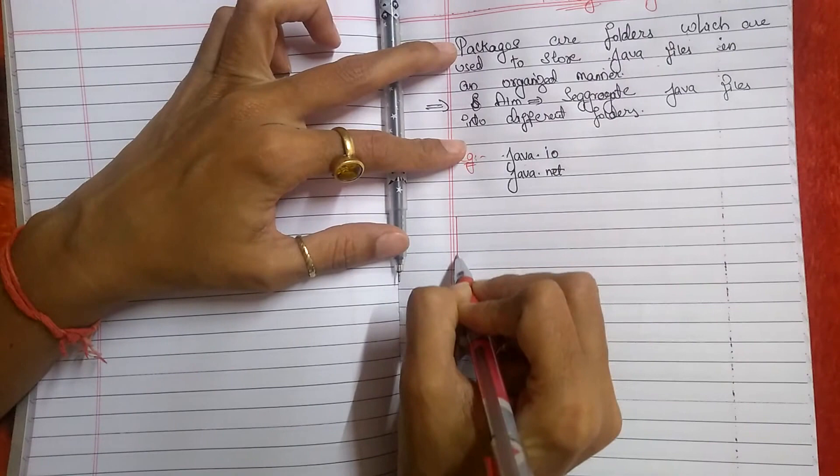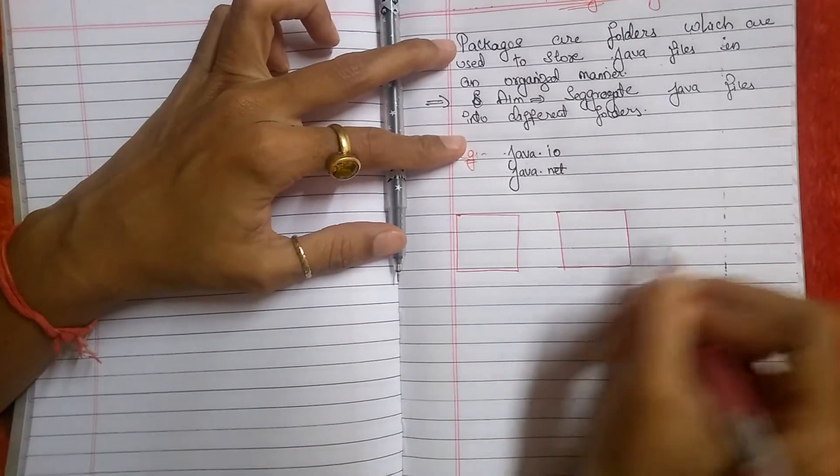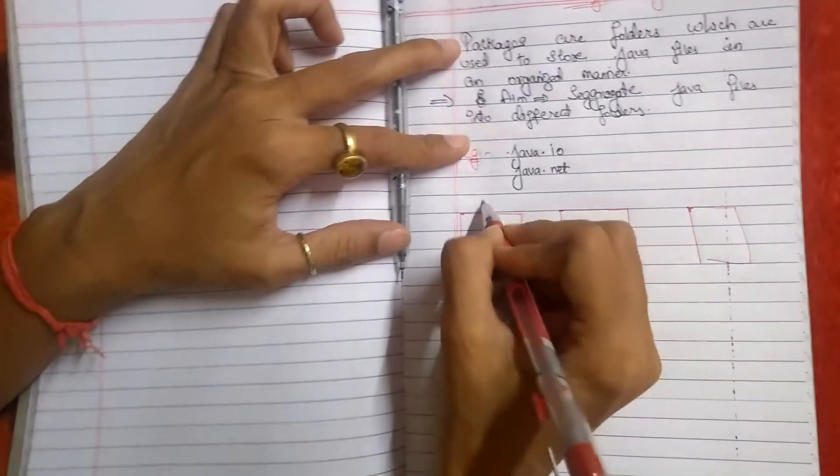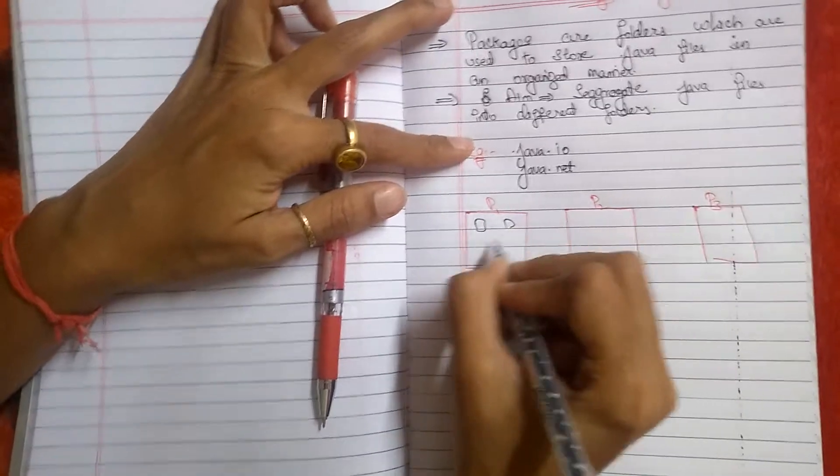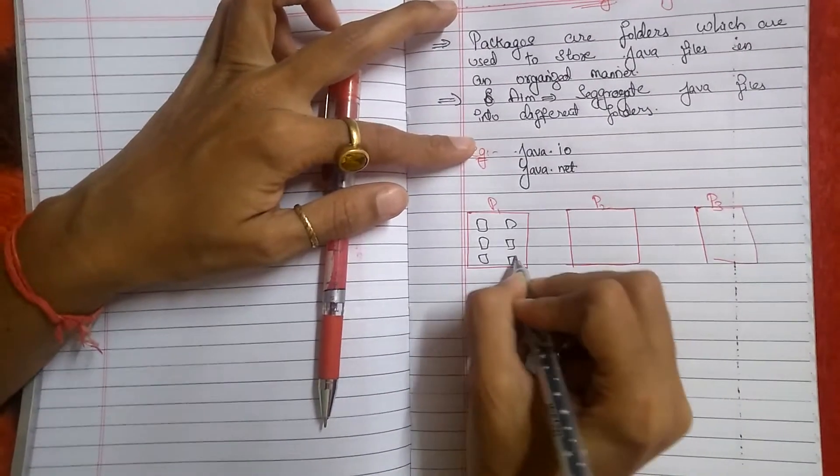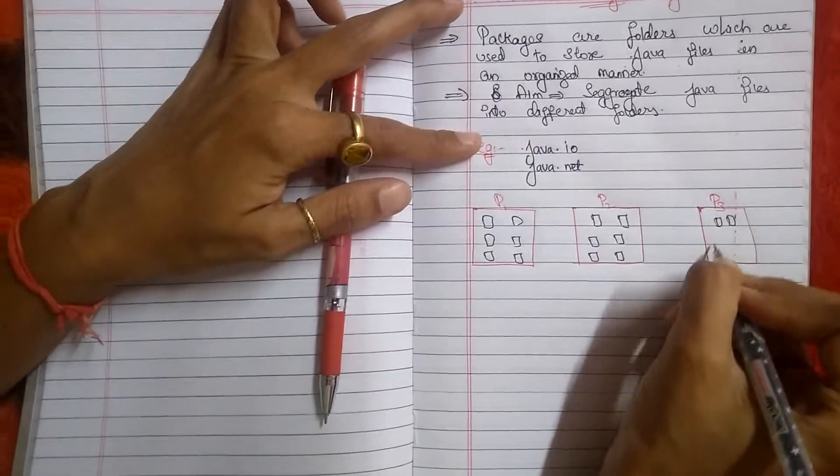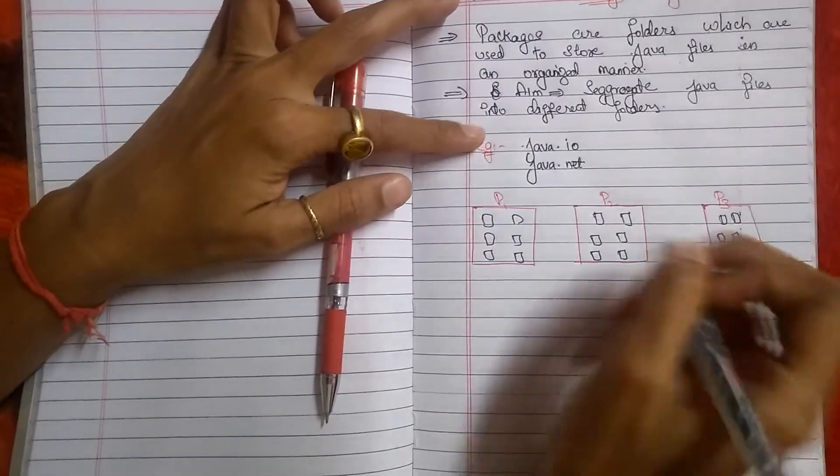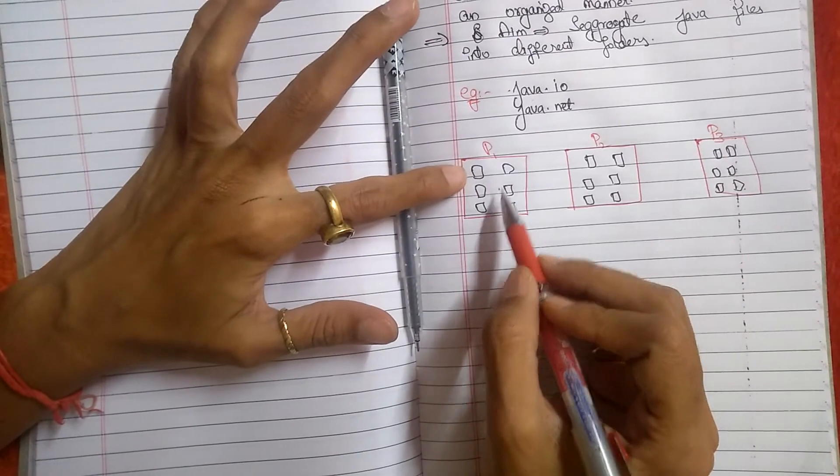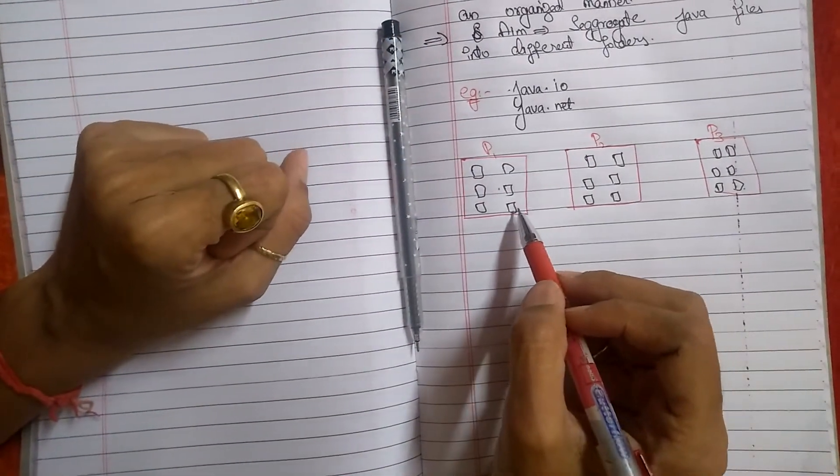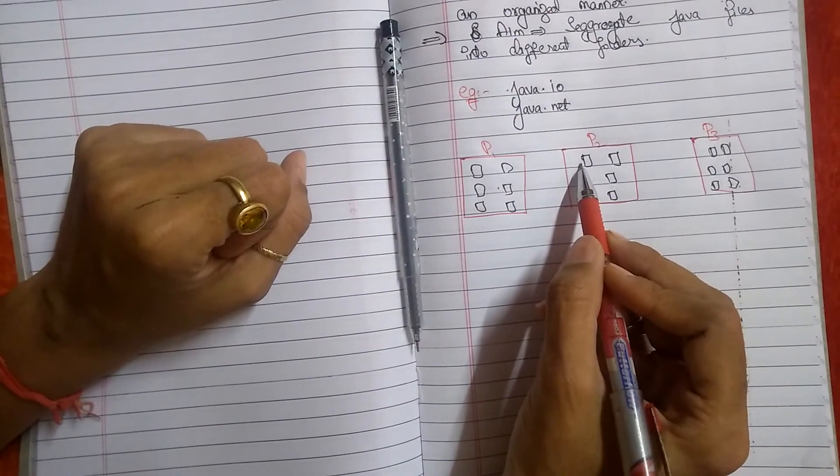In this drawing, I can explain you about packages. Let us assume that this is package 1, package 2 and package 3. In these packages, what we have? These are our class files. One thing I would like to mention is that same package may not have the same class files. The names cannot be similar. But different packages like package 1 and package 2, in different packages we may have the similar class files.